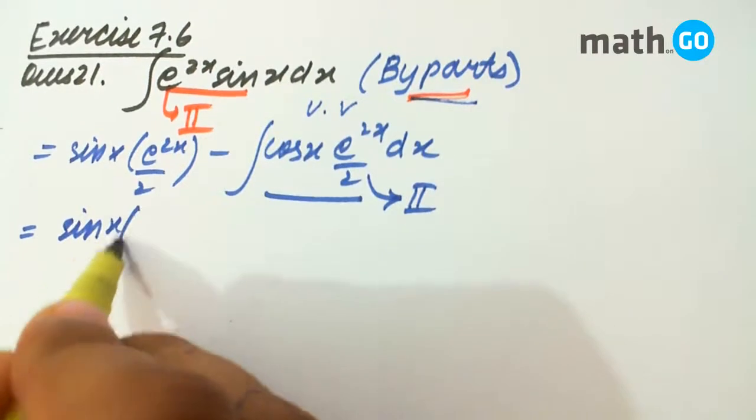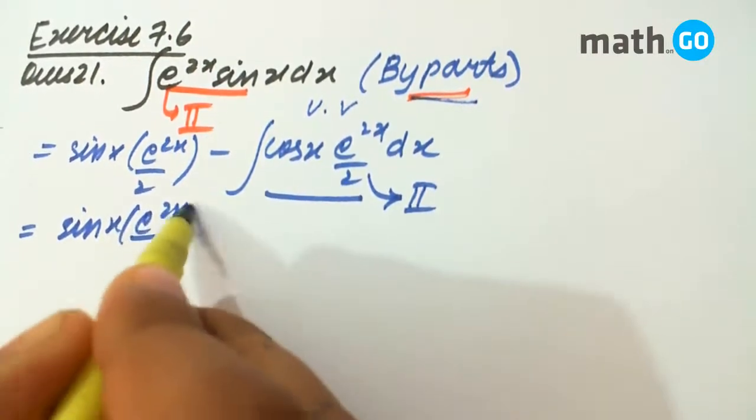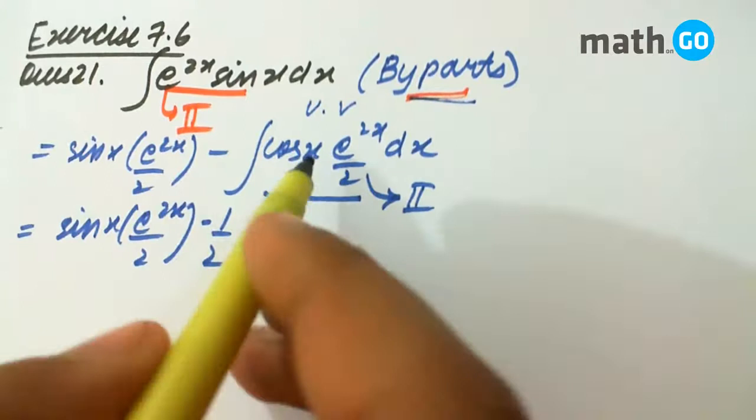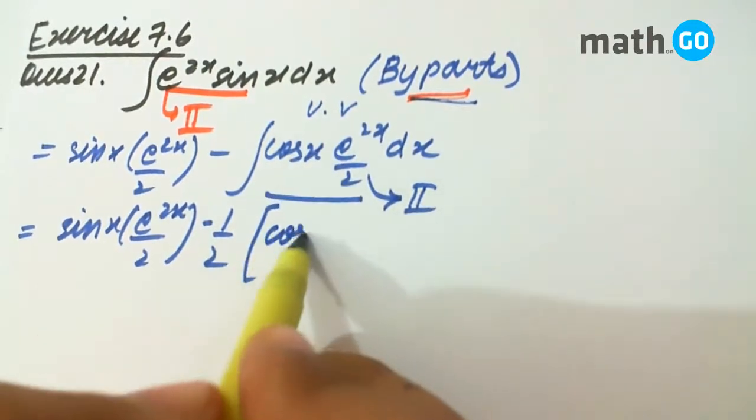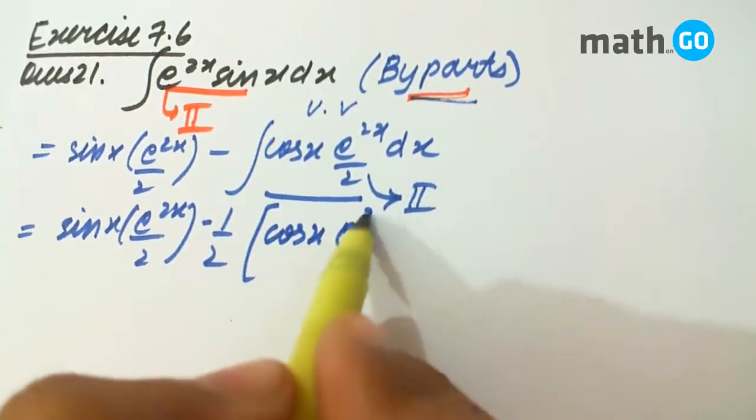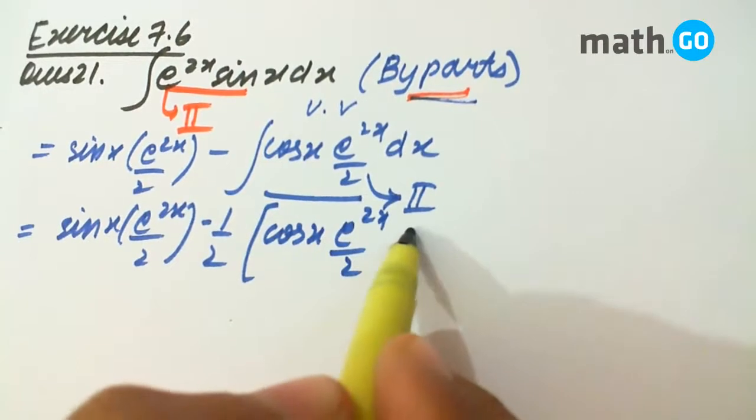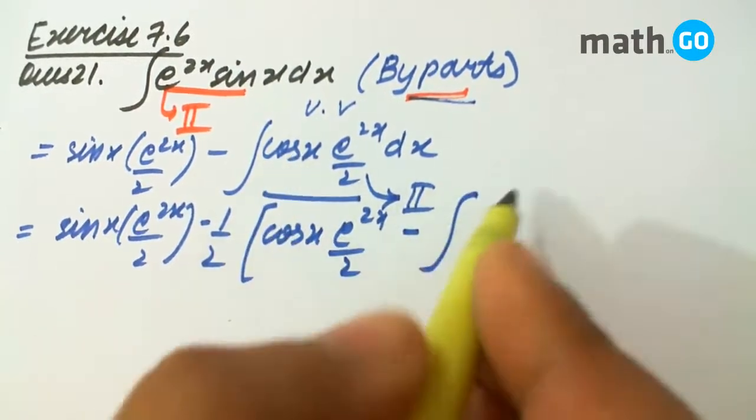We have sin x e to the power 2x by 2, minus the common term, then cos x into e to the power 2x by 2, minus derivative of this.